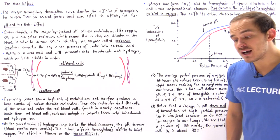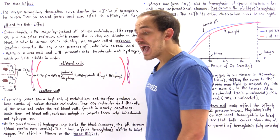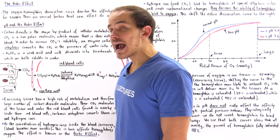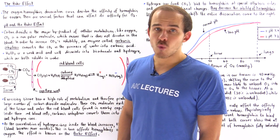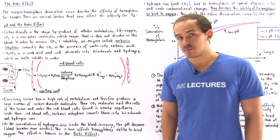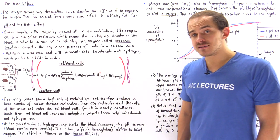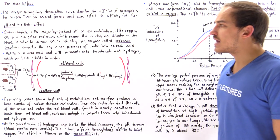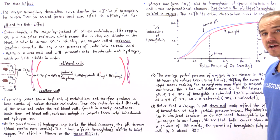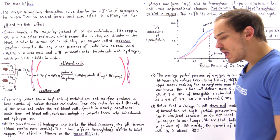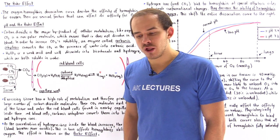Because carbon dioxide is non-polar and our blood plasma consists mostly of water, a polar molecule, carbon dioxide will not actually dissolve in our blood plasma very easily. So how exactly does our body solve this problem?